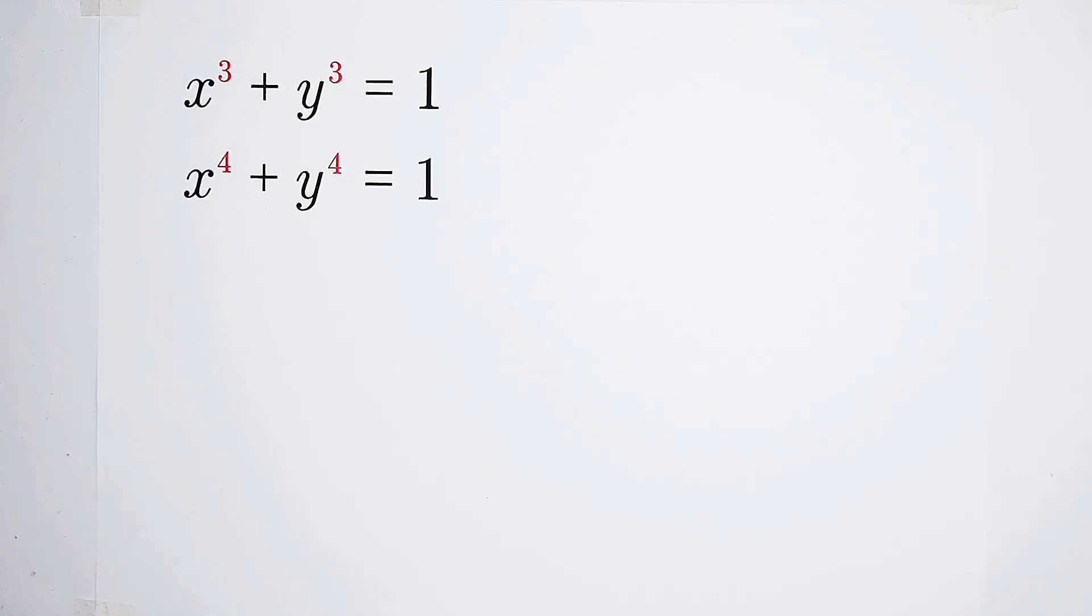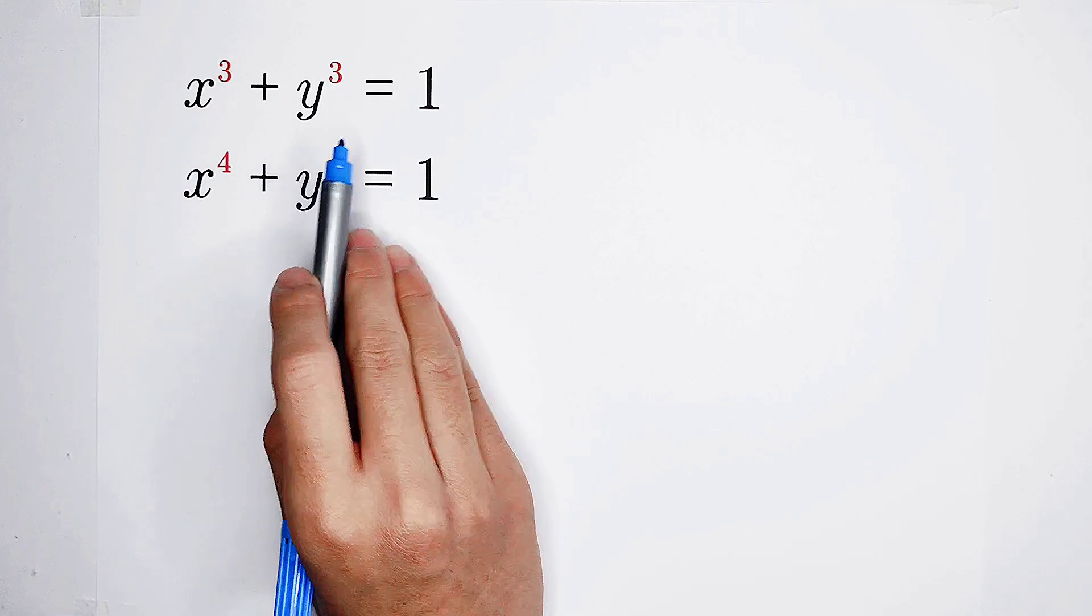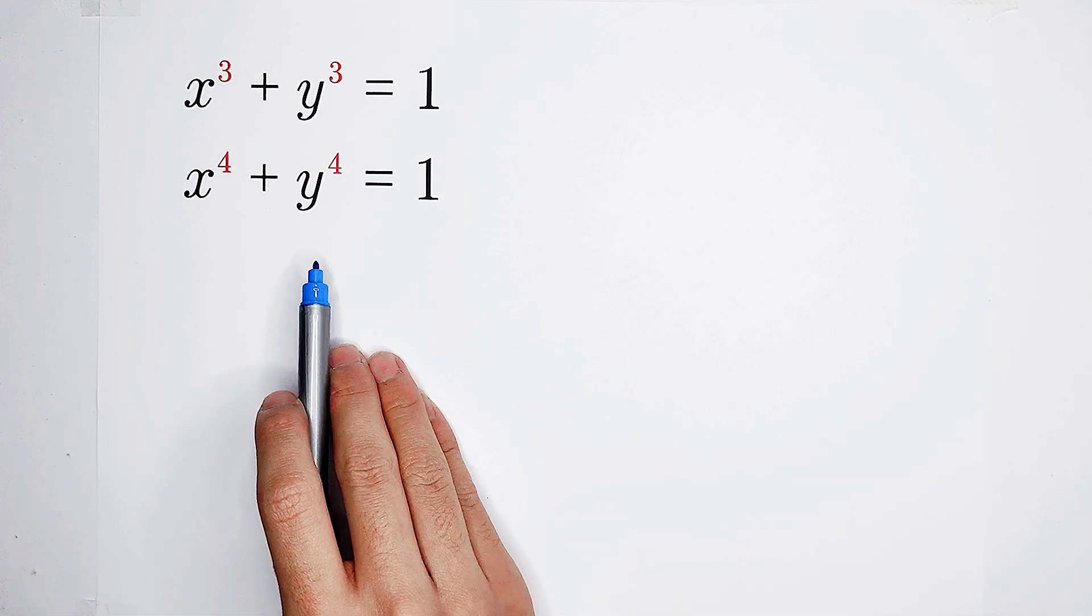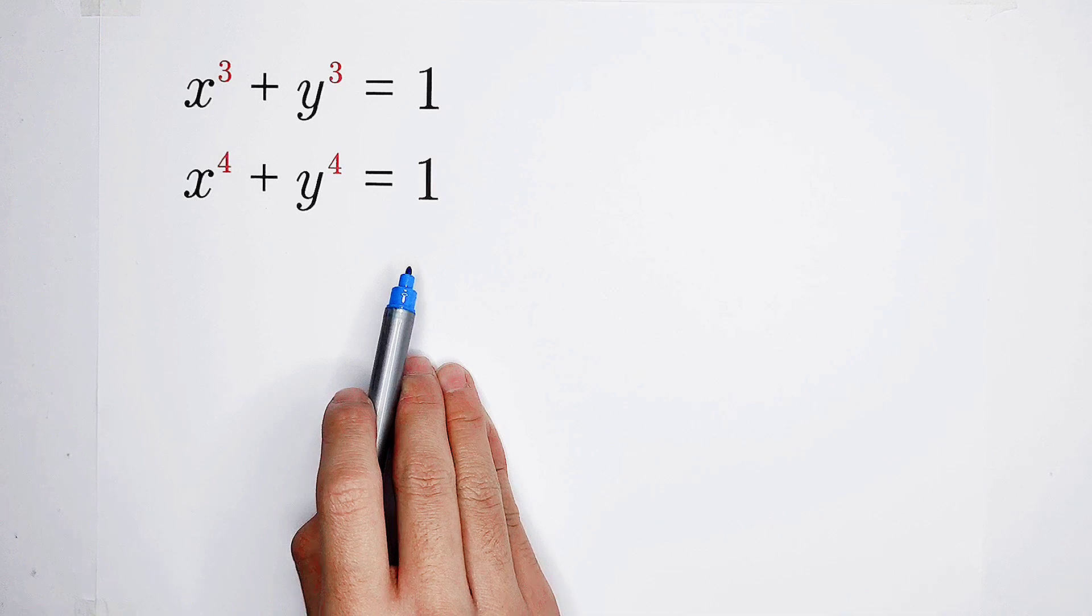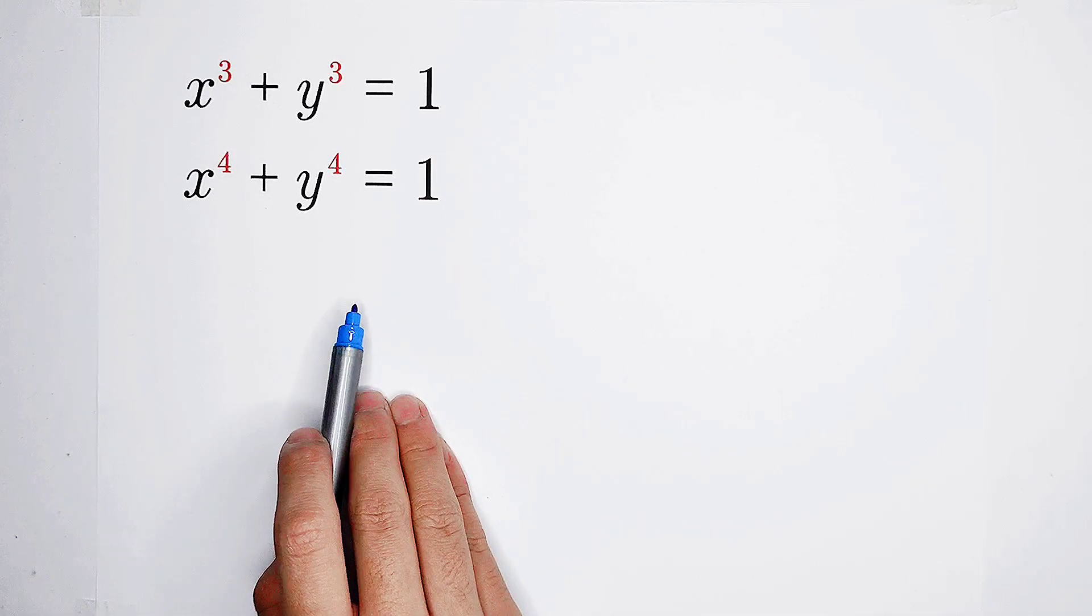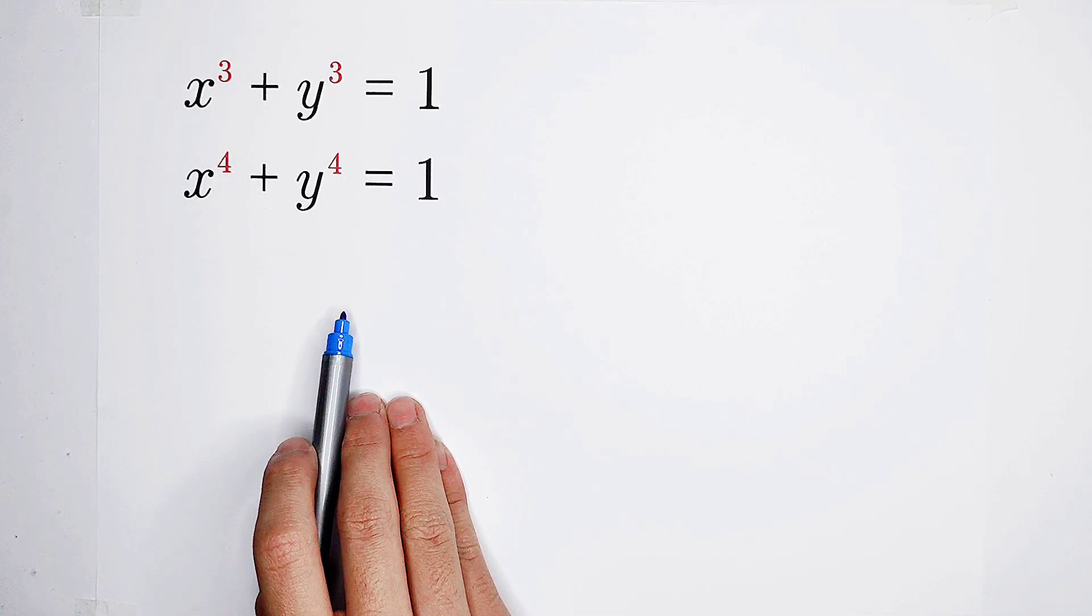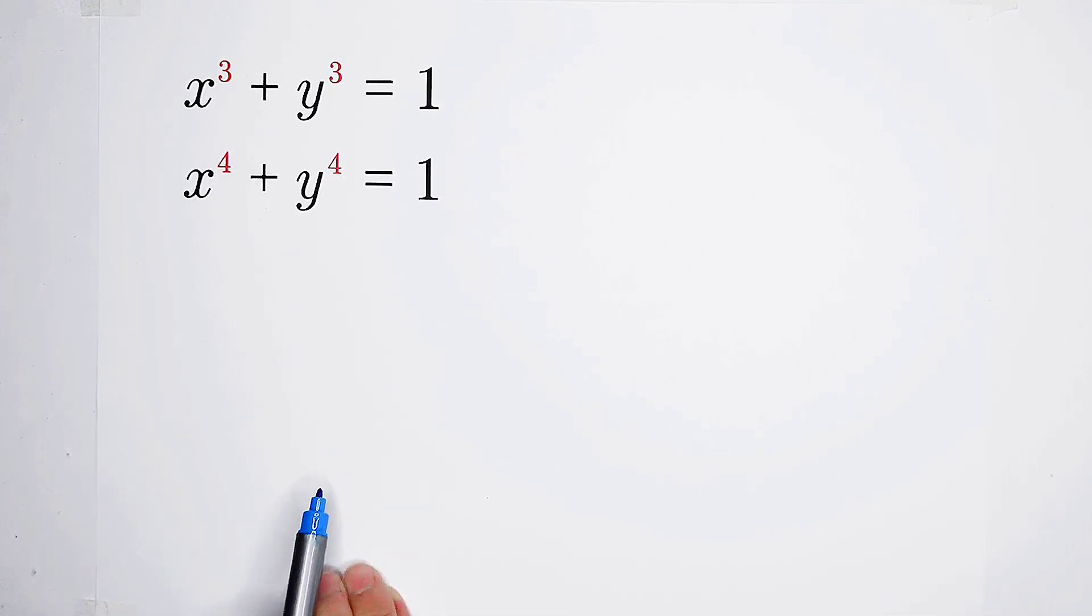Can you solve this math problem? x cubed plus y cubed equals 1. x to the power 4 plus y to the power 4 equals 1. Solve the values of x and y. Common methods don't work here. So we have to think up something else.